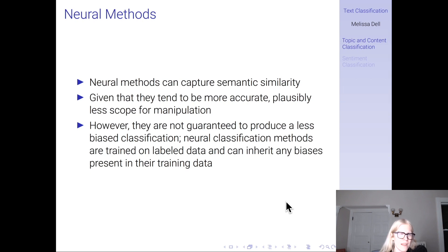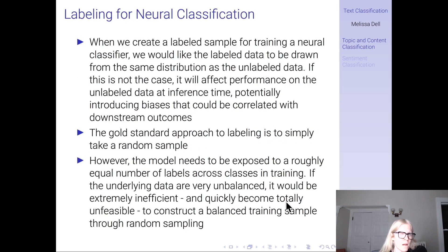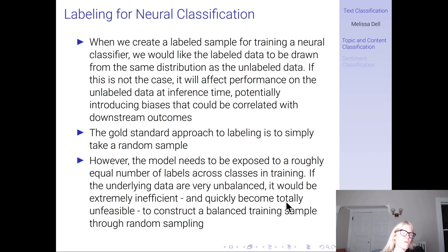Neural classification methods are trained on labeled data. So if there are problems with your labeled dataset, they're going to inherit whatever biases are present in your labels. More specifically, when we create a labeled sample for training a neural classifier, we'd like the labeled data to be drawn from the same distribution as the unlabeled data. If this is not the case, it will affect performance at inference time — you'll get worse performance — and it will potentially introduce biases that could be correlated with downstream outcomes.